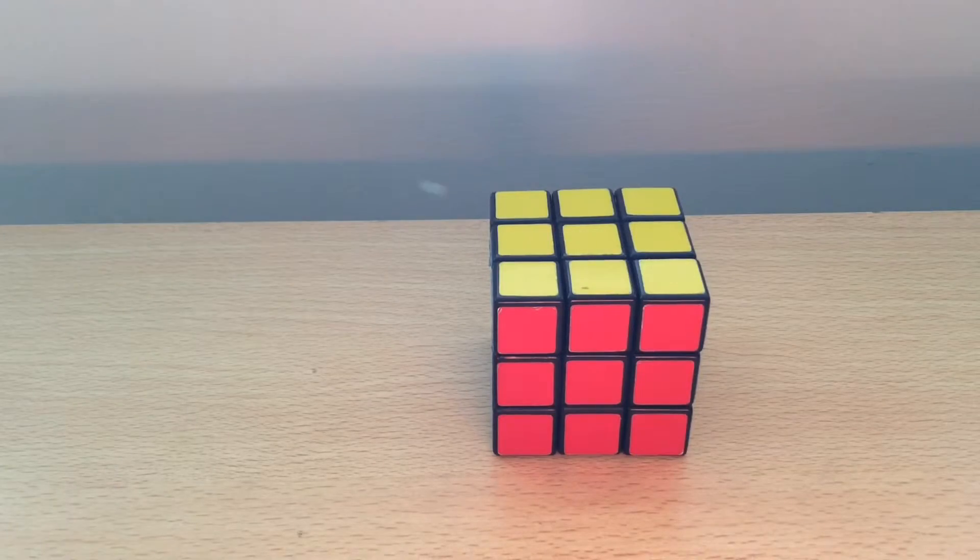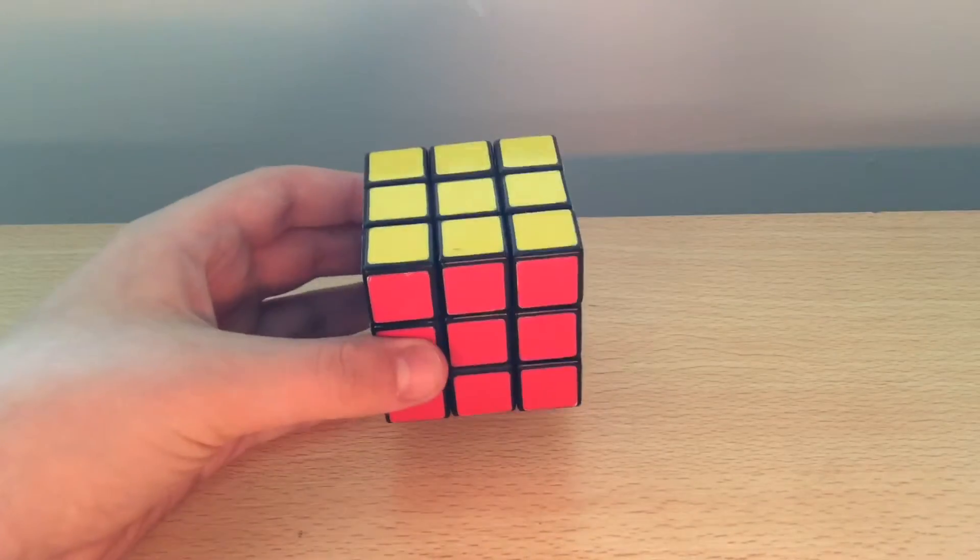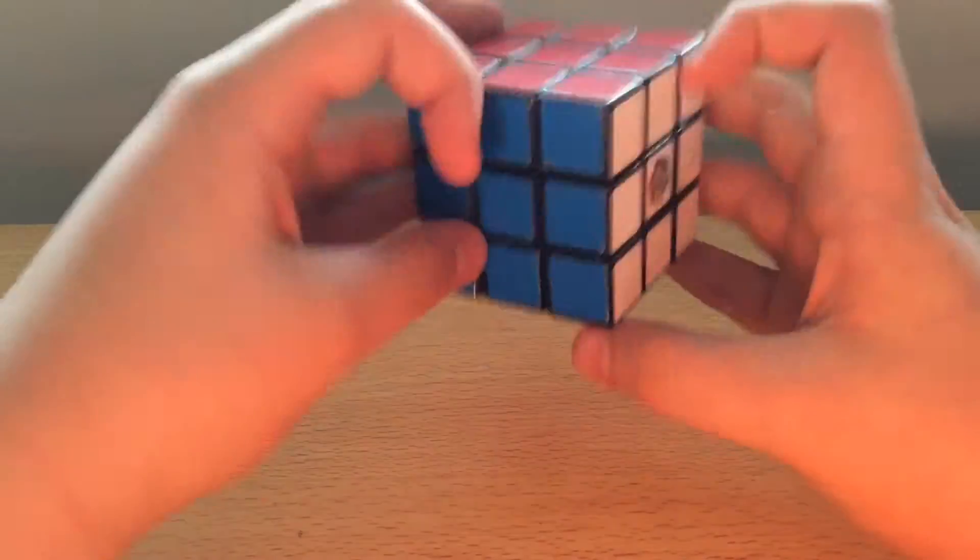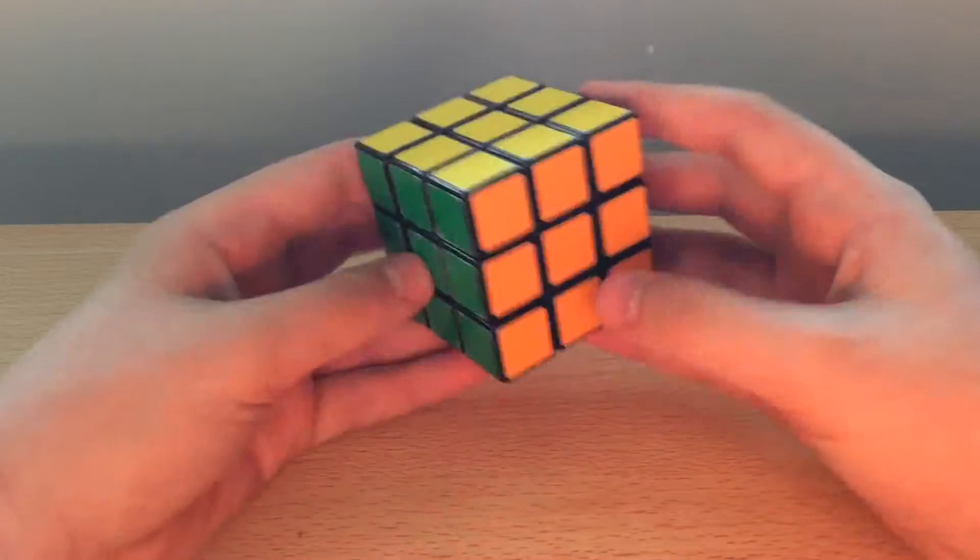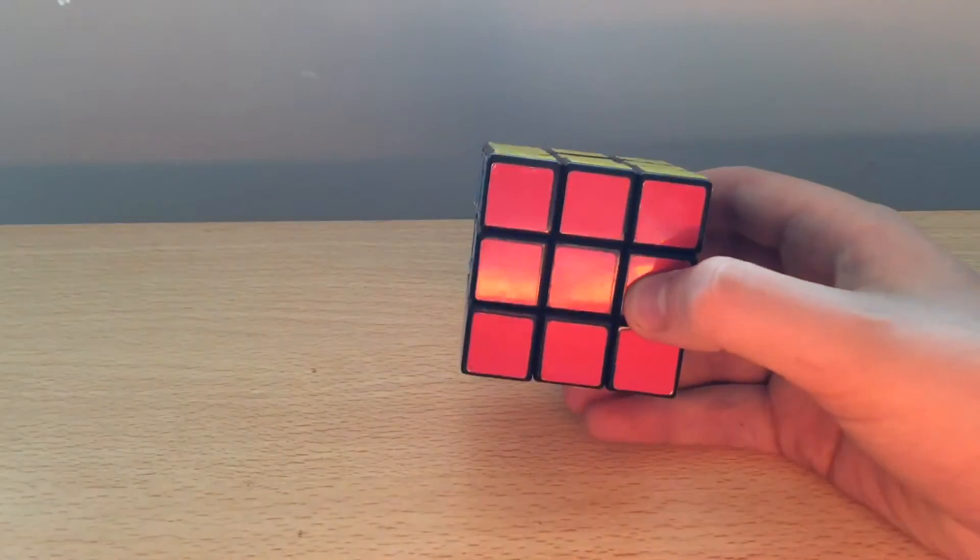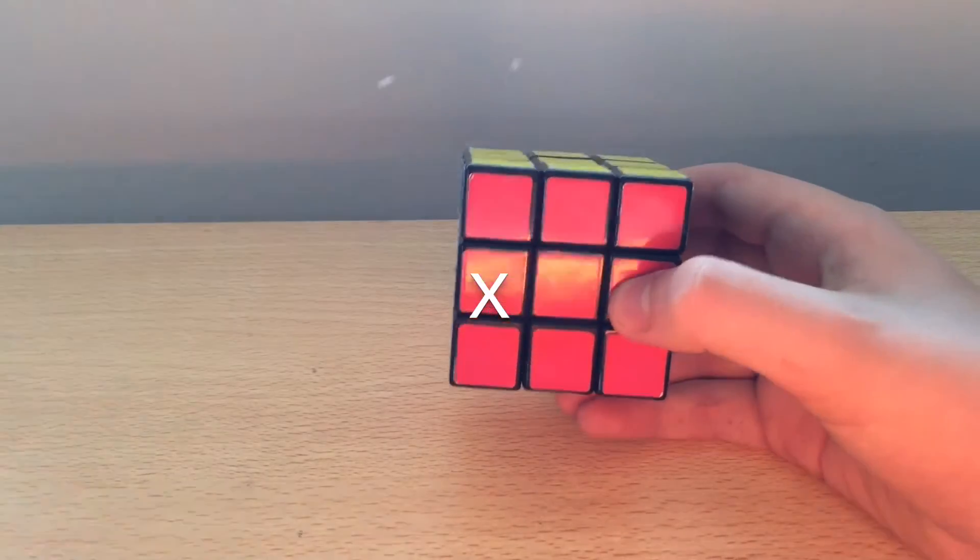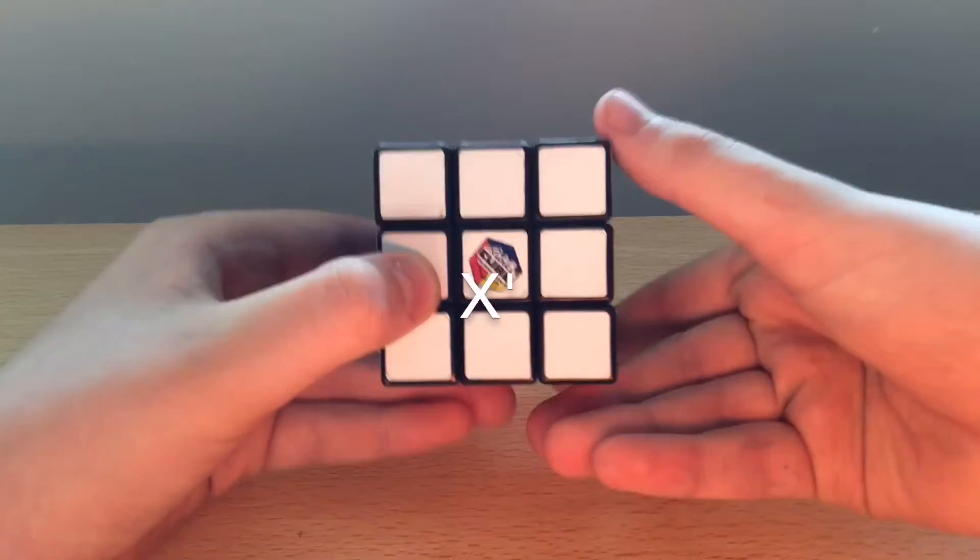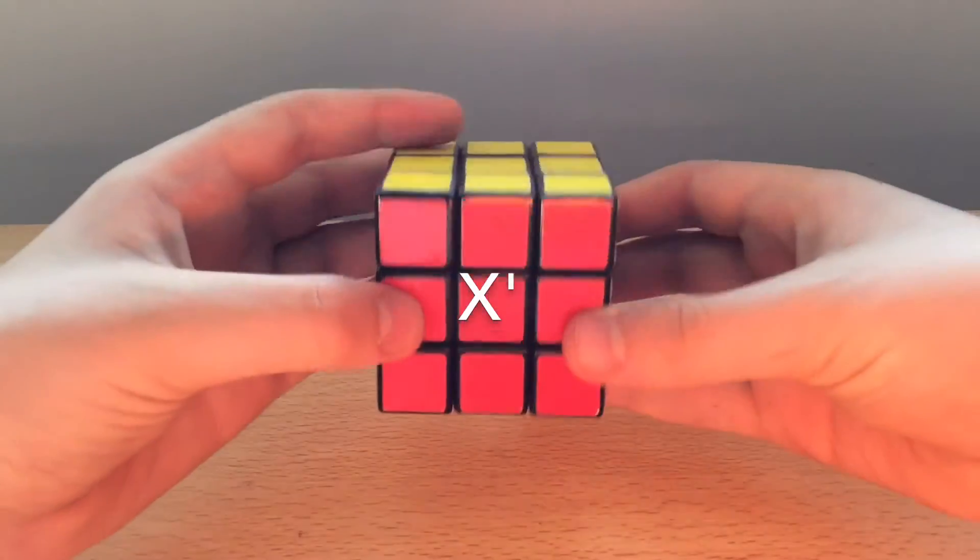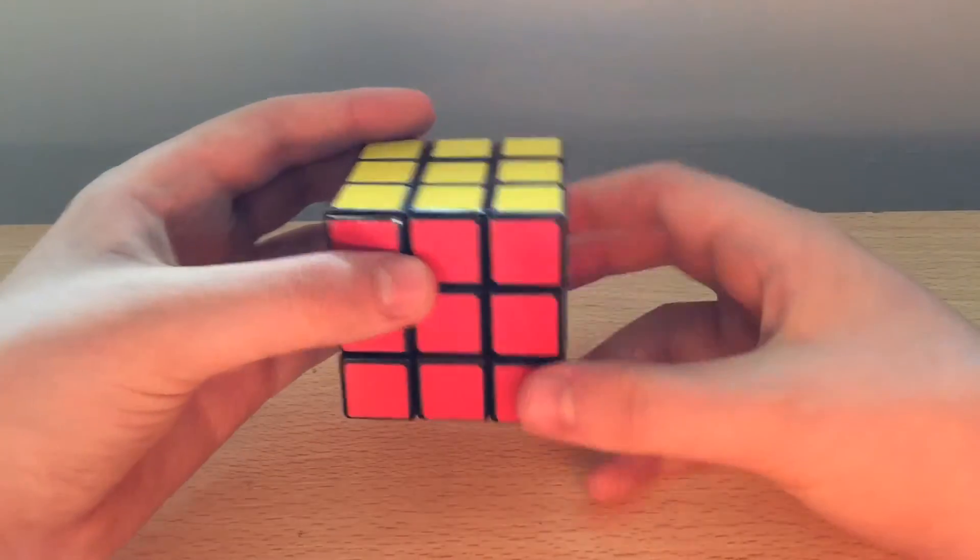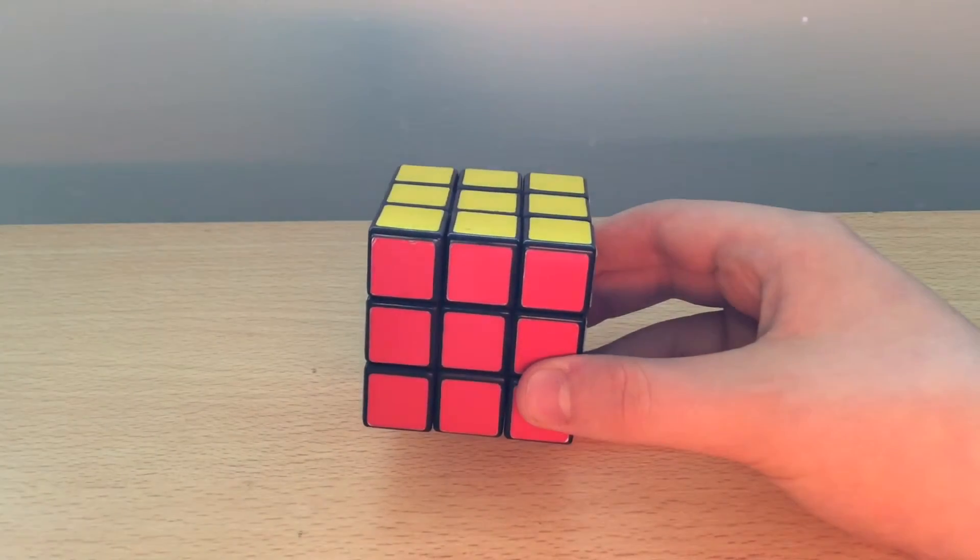So now we're going to learn something called whole cube rotations, which is where we have the cube and in the middle of an algorithm it's easier to go and change which face we're looking at. So if we start off again with yellow on top and red on the front, if we perform an X move, we're going to rotate the cube like this. And if we get an X dash move, we're going to rotate it like that. So X is like the M slice was, but rotating the whole cube.